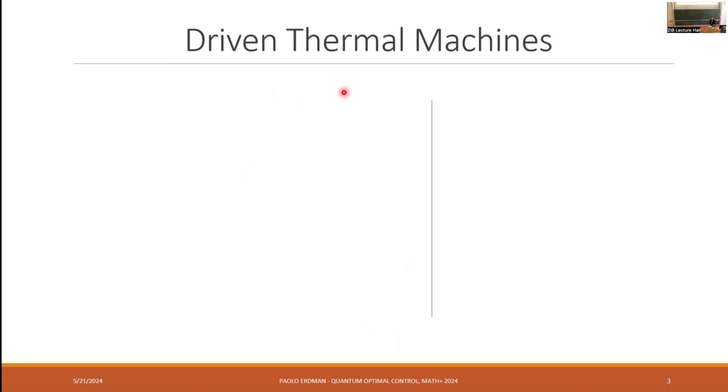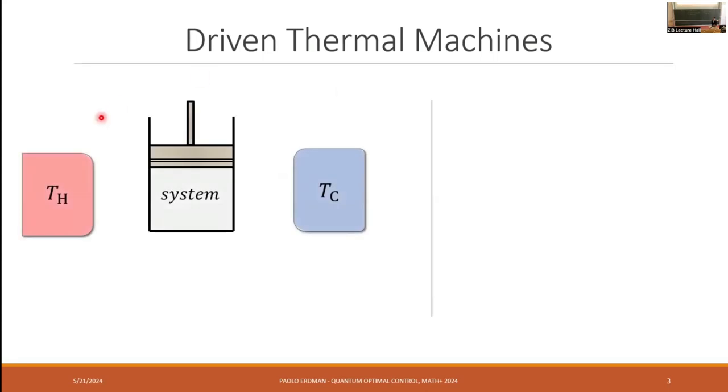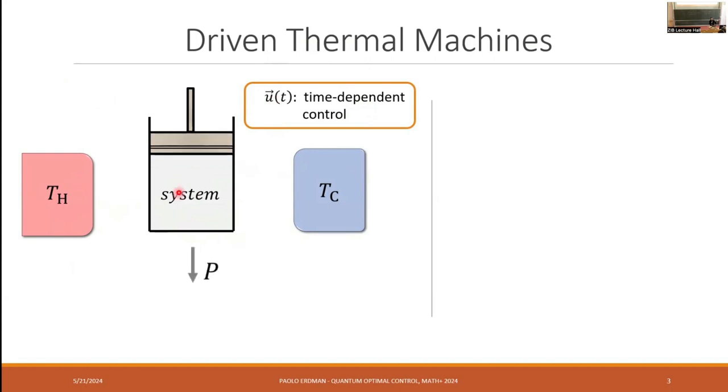In this presentation, I'll focus on driven thermal machines, so heat engines and refrigerators. From an abstract point of view, what I have in mind is the following: we have some system that in time can be coupled to a hot bath and exchange some heat, we can couple it to some cold bath and exchange some heat. And importantly, we have a set of time-dependent controls that we can control in time. These allow us to control the state of the system, but also to exchange work with the system. For example, if this control U was a position of a piston and this is a gas in a piston, if we allow it to expand we can extract work from the system.